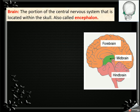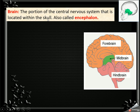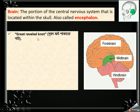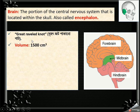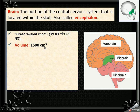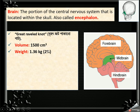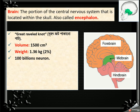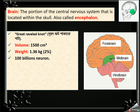The brain, also called Mastishka, is the portion of the central nervous system that is located within the skull. It is also called encephalon. The volume of the brain is 1500 cubic centimeters, and its weight is 1.36 kg, which is 2% of total body weight. The brain contains 100 million neurons and 1 trillion neuroglial cells.